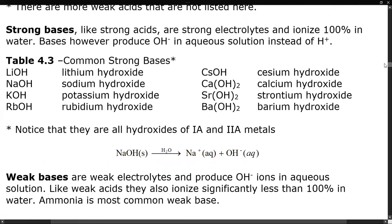Strong bases, like strong acids, are strong electrolytes and ionize 100% in water — however, they produce hydroxide ions instead of H+. Common strong bases are mostly Group 1A metal hydroxides: lithium hydroxide, sodium hydroxide, potassium hydroxide, rubidium hydroxide, and cesium hydroxide. The heavier Group 2A metal hydroxides are also considered strong: calcium hydroxide, strontium hydroxide, and barium hydroxide. Sodium hydroxide, for example, ionizes completely to form Na+ and OH−. The Group 2A metal hydroxides have lower water solubility, and many other metal hydroxides are not considered strong because they're not terribly water-soluble.